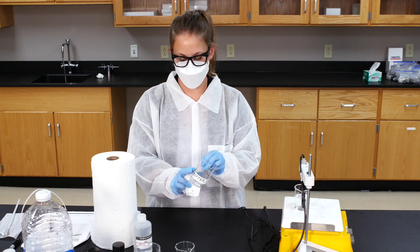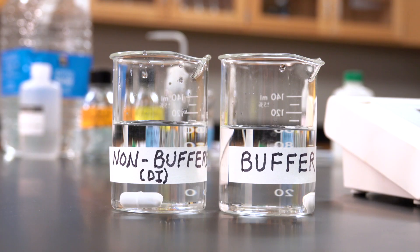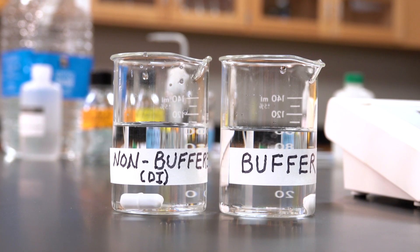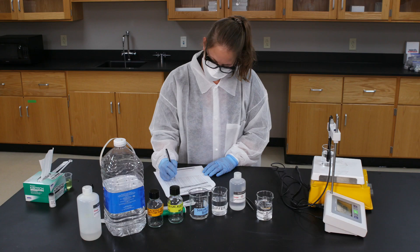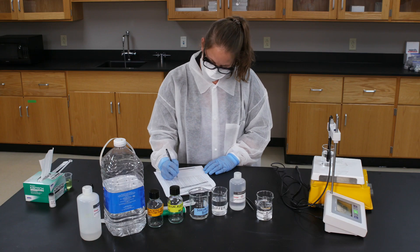Let's do the experiment again, but this time we'll add one milliliter of a base, six molar sodium hydroxide. With two clean beakers, add 100 milliliters of buffer to one and 100 milliliters of deionized water to the other, just like before. Again, take and record the initial pH.